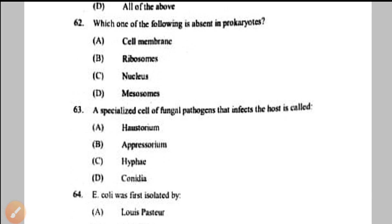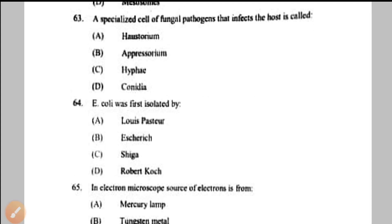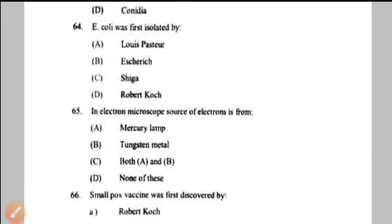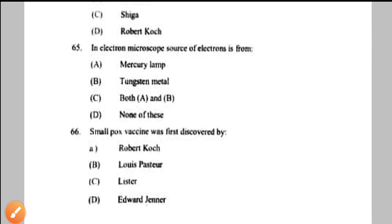Question number 62: which is absent in prokaryotes — they do not have a well-developed or true nucleus — option C. Question number 63: a specialized cell of fungal pathogens that infects the host is called haustorium — option A. Question number 64: E. coli was first isolated by — Dr. Theodore Escherich discovered it in 1885, hence the name Escherichia coli — option B.